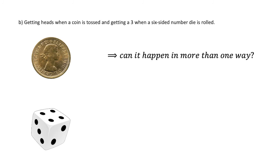The answer is yes. This is a combination of two events. We have the probability of getting heads when a coin is tossed, and we also need to take in the probability of getting a 3 when a six-sided number die is rolled.